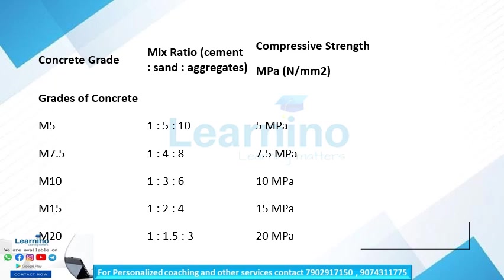M10 has a mix proportion of 1:3:6 and strength of 10 N/mm². M15 has a mix proportion of 1:2:4 and strength of 15 N/mm². M20 has a mix proportion of 1:1.5:3 and strength of 20 N/mm². M25 has a strength of 25 N/mm².